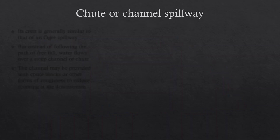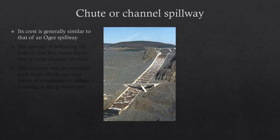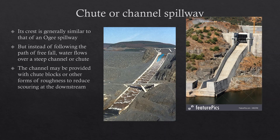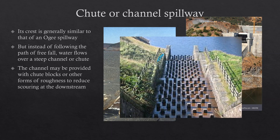Another kind is the chute or channel spillway — basically a steep channel through which water is diverted. The top of the channel may be designed like an OG spillway with that curved shape. While flowing through the channel, we may provide measures to dissipate energy, such as roughness elements on the channel surface, or a stepped shape to the spillway to reduce energy as the water flows down.